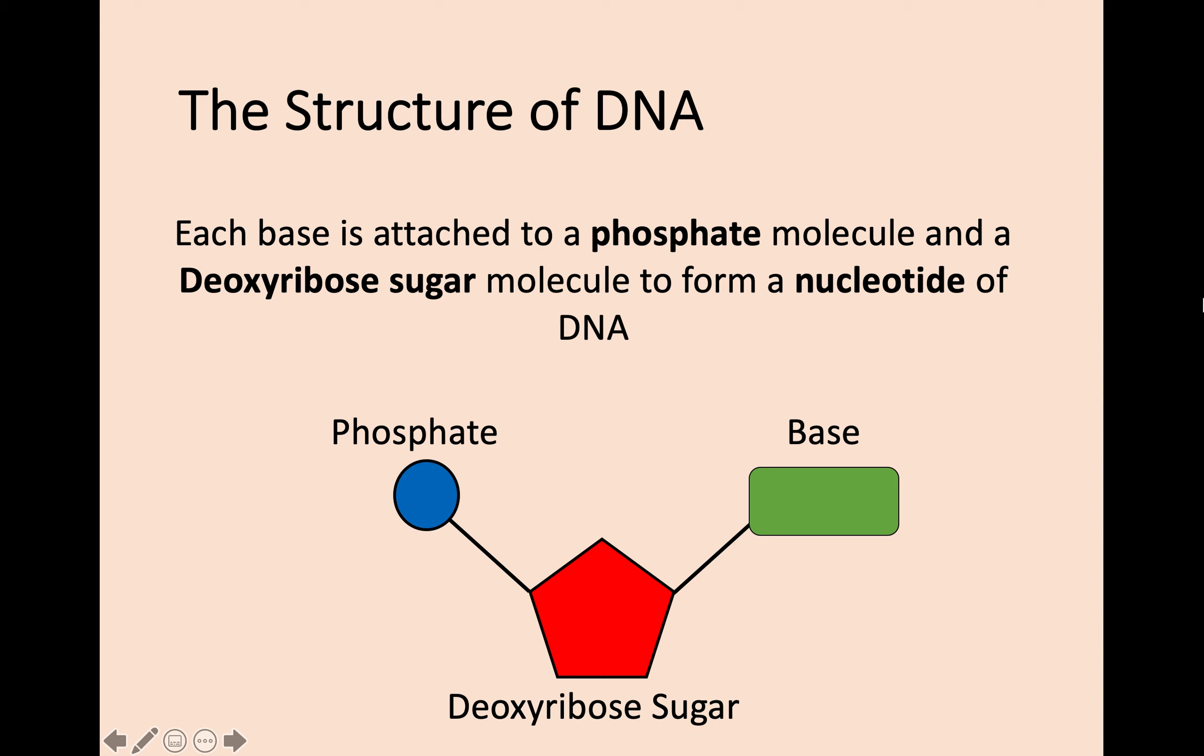As you can see on the right hand side, we've got those bases that we spoke about. What we're concentrating on is the full nucleotide in Higher Biology and what it's made up of. On the left hand side you have a phosphate molecule that joins onto a sugar molecule, specifically a deoxyribose sugar molecule. That then connects onto a base, and together they form this nucleotide of DNA.